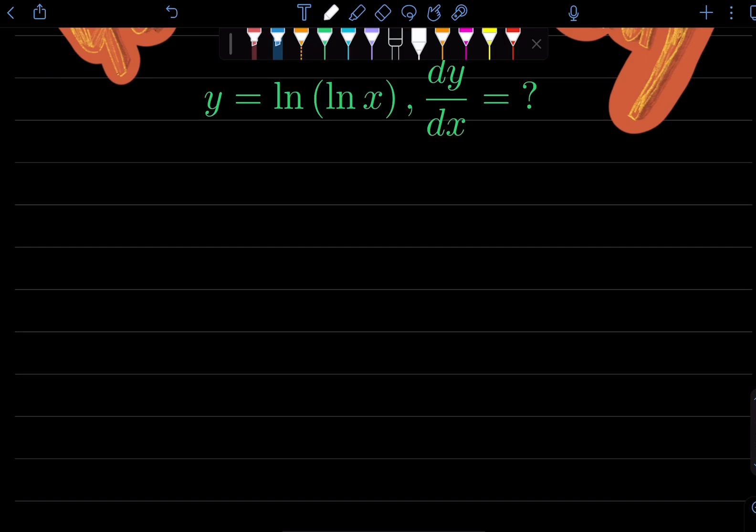There are a couple of ways to approach this but there is one really cool way while doing implicit differentiation that we can do and I'm going to show that process to you. If y equals ln of ln x...